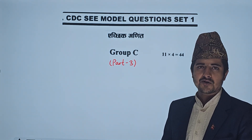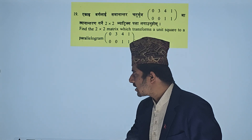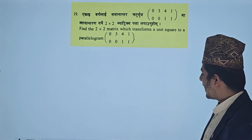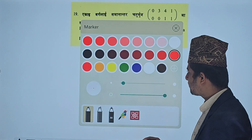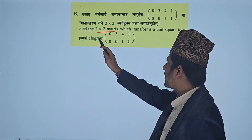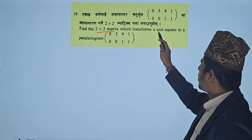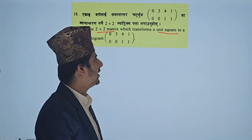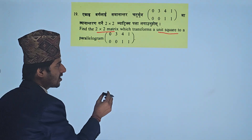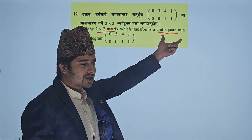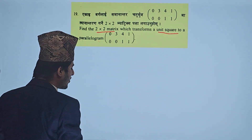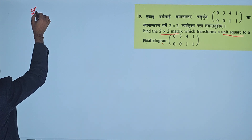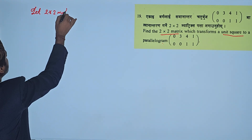Part 1 is 4, Part 2 and Part 3. Part 3 is 3. Part 1 and Part 2 is 3. So, let's assume a 2 by 2 matrix.